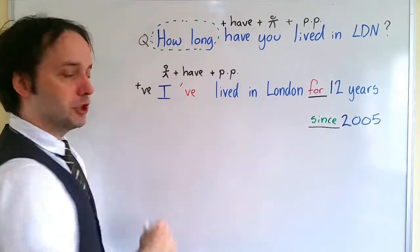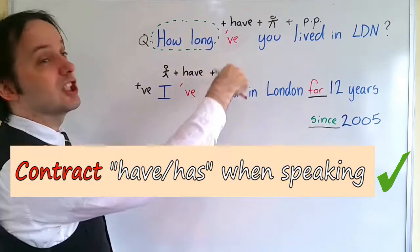Remember, present perfect, when we speak, we always contract the auxiliary verb. So I have will be I've. I've lived in London for 12 years. I've lived in London since 2005. It sounds much more natural, doesn't it? How about the question? Can we contract the auxiliary in the question? Yes, we can. I wouldn't say how long have. Writing and talking at the same time, bad idea. How long have you lived in London? I've lived in London for 12 years. And also, the auxiliary verb is has. How long has he lived? He's lived in London for 12 years.